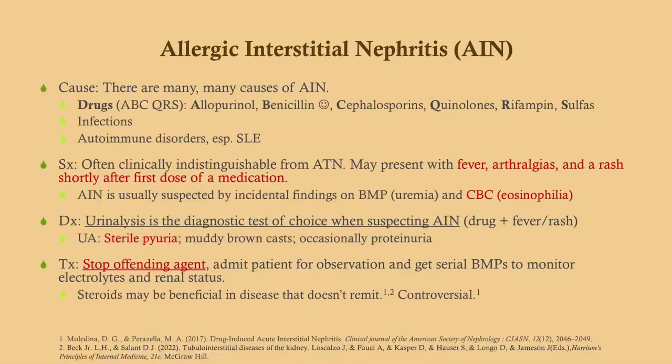Allergic interstitial nephritis has many causes — usually drugs. Remember the mnemonic ABCQRS: allopurinol, penicillin (and beta-lactams), cephalosporins, quinolones, rifampin, and sulfa drugs. Infections and autoimmune disorders can also cause it. Presentation is similar to ATN, but patients may have systemic features — fever, arthralgias, and rash after a medication. CBC may show peripheral eosinophilia. Urinalysis shows sterile pyuria, muddy brown casts, and occasionally proteinuria. Treatment is to stop the offending agent.